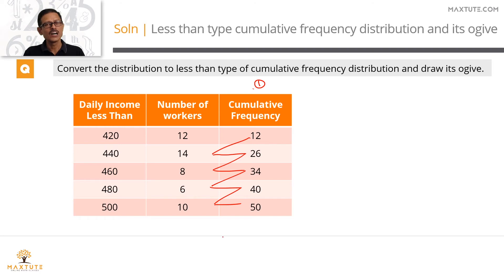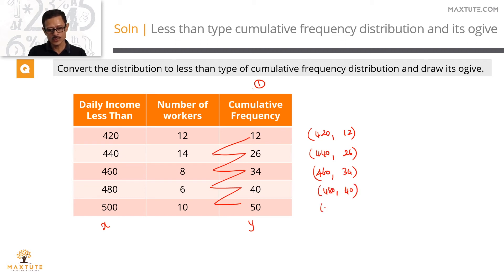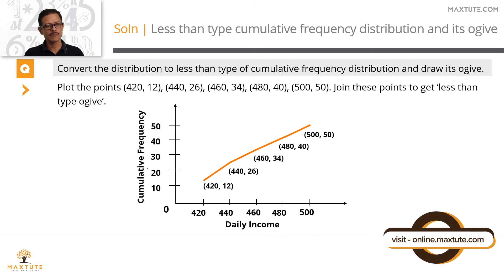Step two is to draw the ogive — a graph with an x-axis and a y-axis. The x-axis plots the upper end of each class interval (daily income), and the y-axis plots the cumulative frequency. We plot five points: (420, 12), (440, 26), (460, 34), (480, 40), and (500, 50). Plot these points, join them, and that gives us the less-than ogive.